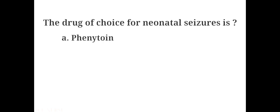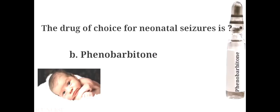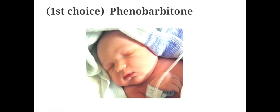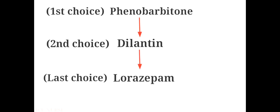The drug of choice for neonatal seizures is: A. Phenytoin, B. Phenobarbitone, C. Lorazepam, D. Diazepam. The answer is B. Phenobarbitone. Dilantin is often the second drug of choice when seizures are not controlled by Phenobarbitone alone. Lorazepam is useful for infants with uncontrolled seizures in spite of therapy with Phenobarbitone and Dilantin.